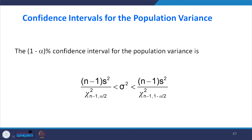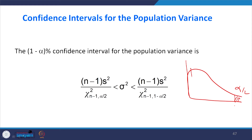The (1 minus alpha)% confidence interval for the population variance uses alpha by 2 on the left-hand side. In the chi-square table, we are given only the right-side area. When the right-side area is alpha by 2, we get a bigger chi-square value; dividing the numerator by a bigger number gives a smaller value — the lower limit of variance. When dividing by the smaller chi-square value (at 1 minus alpha by 2), we get a bigger number — the upper limit of population variance.